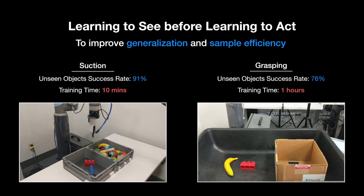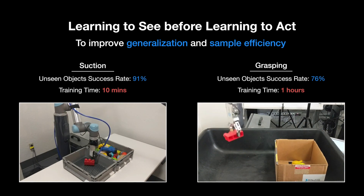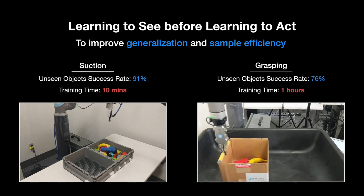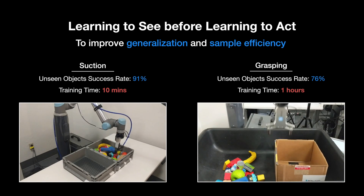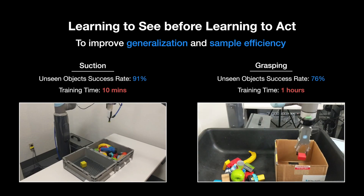In summary, for suction, our method achieves a 91% success rate on unseen objects within 10 minutes of training. For grasping, our model achieves a 76% success rate on unseen objects within an hour of training.